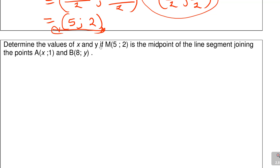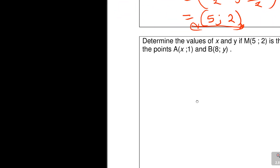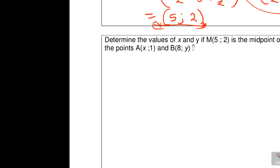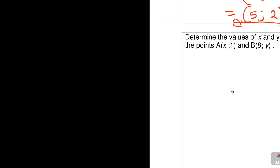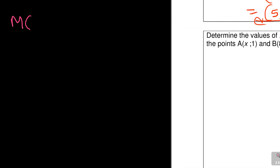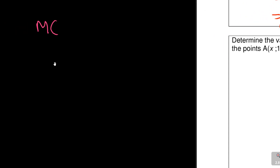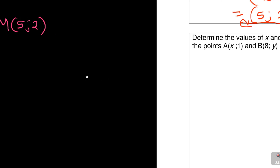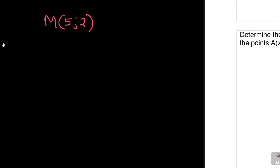Let's look at the next one: determine the values of x and y if M(5, 2) is the midpoint of the line segment joining the points A and B, where A has coordinates (x, 1) and B has coordinates (8, y). So M is the midpoint at (5, 2), A is (x, 1), and B is (8, y).